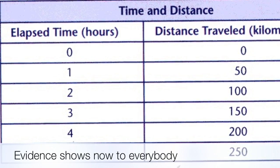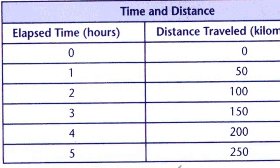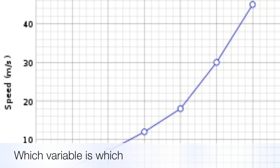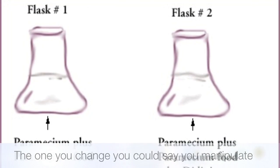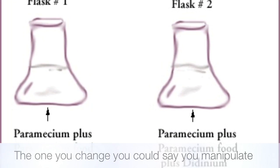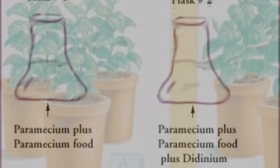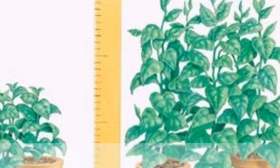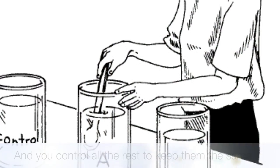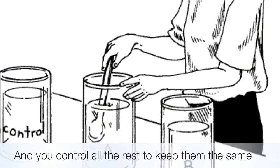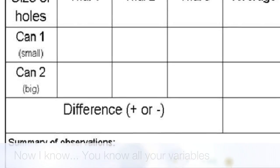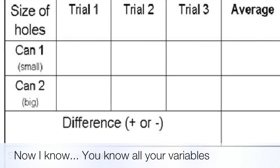Evidence shows now to everybody which variable is which. The one you change, you could say you manipulate. The one you measure responds to that little change. And you control all the rest to keep them the same. Now I know.